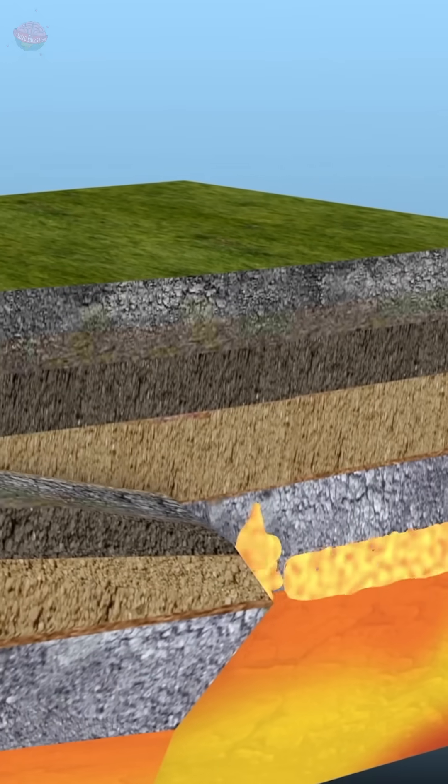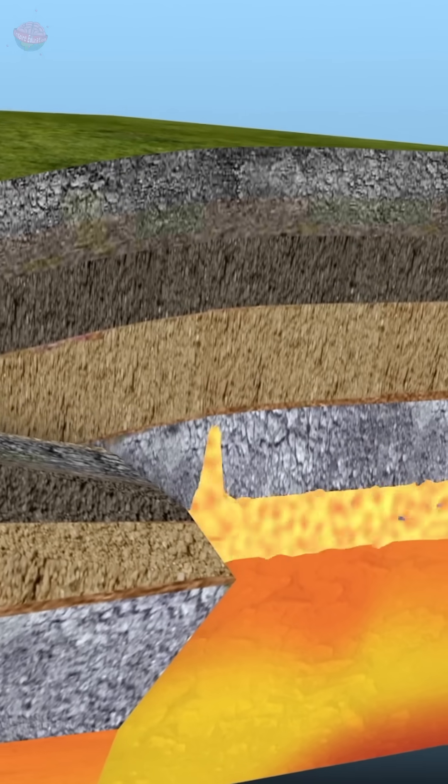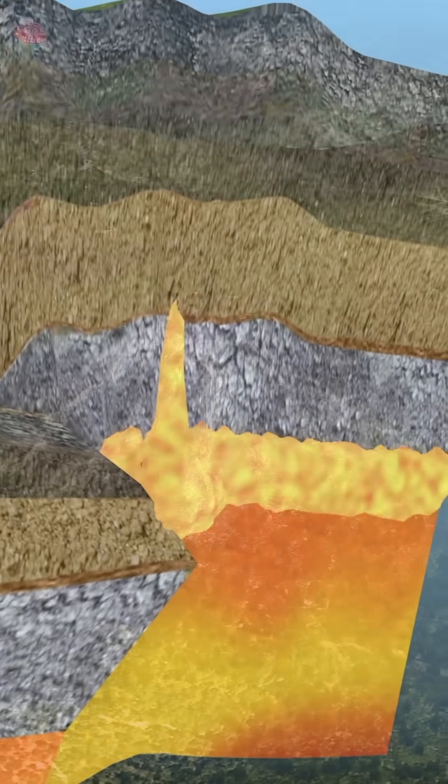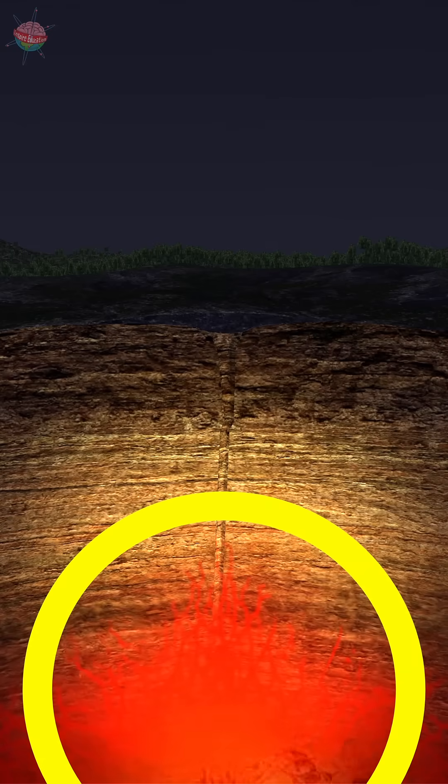As the liquid called magma beneath the Earth's crust gets hotter, it rises. It collects in a space called a magma chamber just under the surface of the Earth.